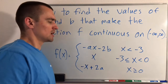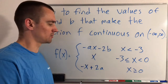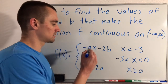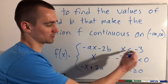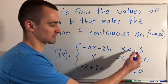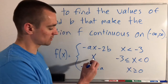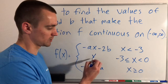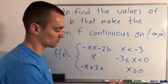Just like I do in my other videos, basically all we need to do is make sure that this function is equivalent to this function when we switch between them — in other words, when x is negative 3. And then we need to make sure that this function is equivalent to this function when we switch between these two, which happens at x equals 0.